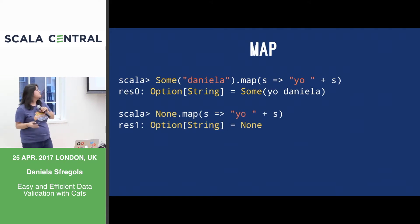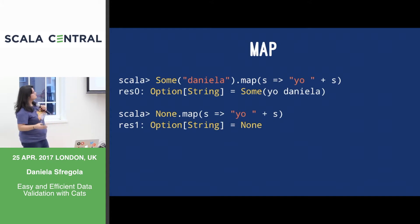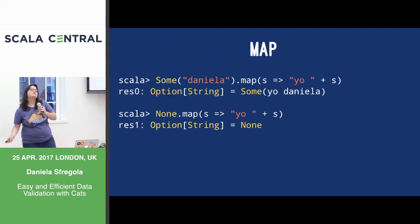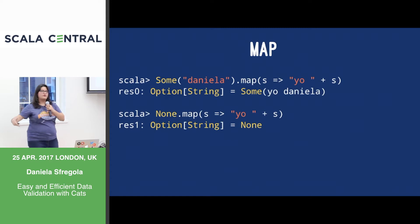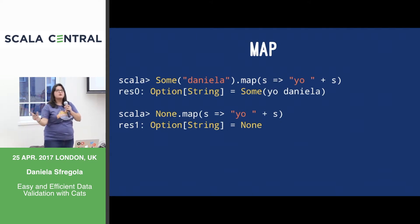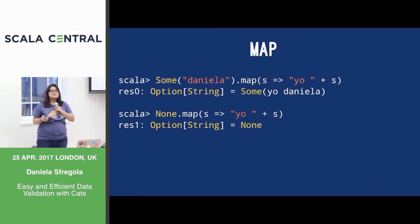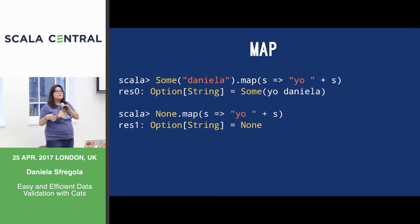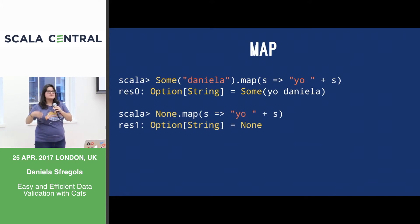First thing: map. Map is this magic function — you probably have seen it. You have it through several classes, let's call them containers. It's like having a box: you open it through the function map, and if you find something in your container then you use the function to modify the content of your box. So in this case we have Some("daniela").map and because Some does contain a value, we can append "yo" in front of the string. What happens if my container is empty? Nothing to do. Map is basically opening a container and seeing what's inside.